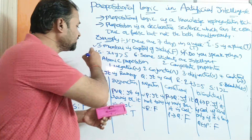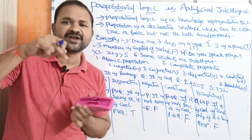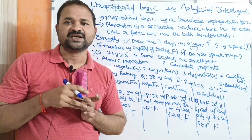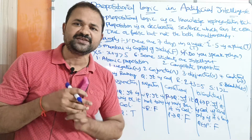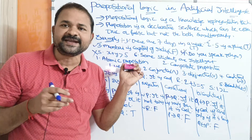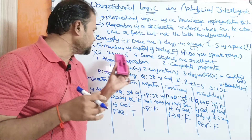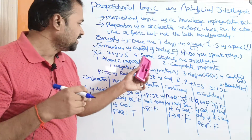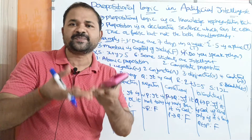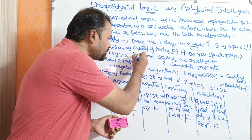'X plus Y greater than 5' — this is also not a proposition. Suppose X and Y values are 1 and 2, then 1 + 2 = 3, and 3 > 5 is false. But if X = 10 and Y = 20, then 30 > 5 is true. This statement returns true for some values and false for others, so it is not a proposition. Similarly, 'Some students are intelligent' is not a proposition, because some students may not be intelligent and some may be, making the truth value both true and false simultaneously.